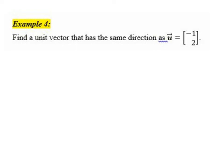In this problem, we're asked to come up with a unit vector, so that's a vector with length 1, that has the same direction as this vector u that's given as negative 1, 2.